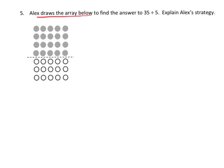In this problem, Alex draws the array below to find the answer for 35 divided by 5. So he's drawn 35 circles and he's put them in rows of 5. Now of course we can see that the answer is 7 because there's 7 rows, but let's use the distributive property. So we know that he's begun by taking these 20 and dividing that by 5, and then he's taking these, let's see, 15 and dividing them by 5.